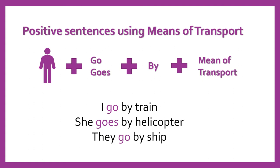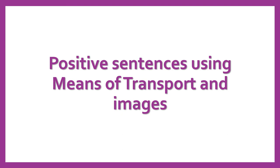As you can see here, we use the verb go because we have the personal pronoun I. Next: she goes by helicopter — ella va en helicóptero. Here we use the verb goes because we have the pronoun she. And finally: they go by ship — ellos o ellas van en barco.